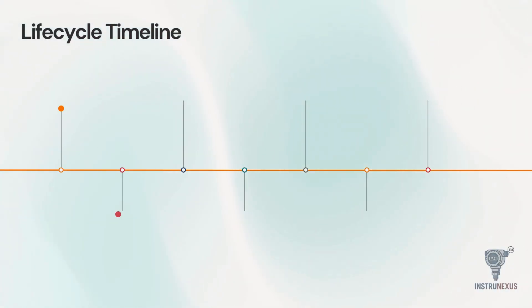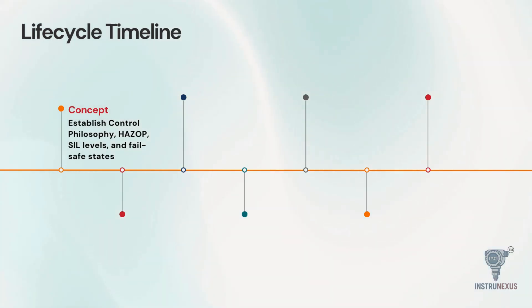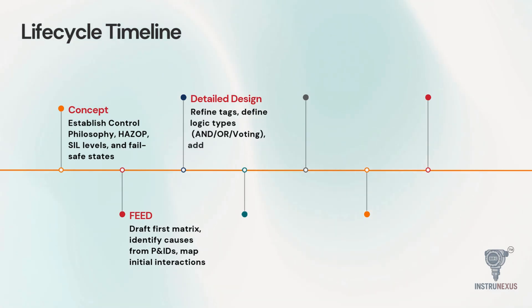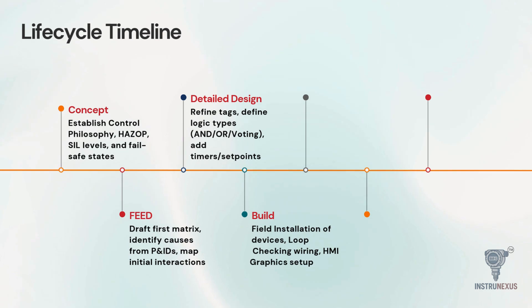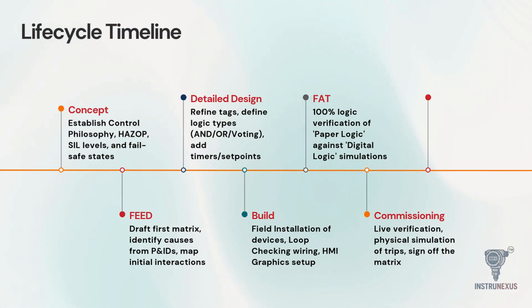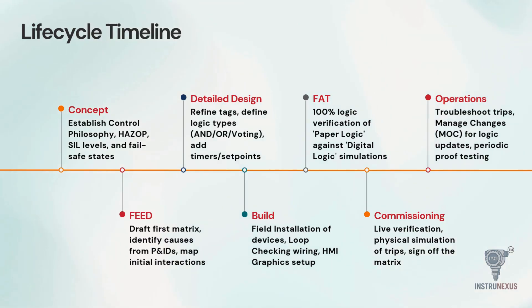To understand the matrix, we have to look at its timeline. It is not a static document — it evolves. It begins in the concept phase, where we establish the control philosophy and safety levels. It moves to front-end engineering design, or FEED, where the first draft is created based on P&IDs. In detailed design, we refine the tags and add logic timers. During the build phase, physical installation and loop checking occur. Then comes the FAT, where we verify the logic digitally. We then move to commissioning for live verification. Finally, in operations, the matrix is used for troubleshooting and managed through strict management of change procedures.